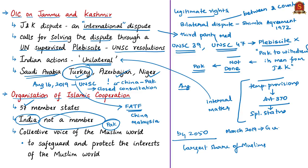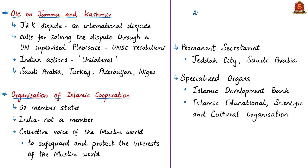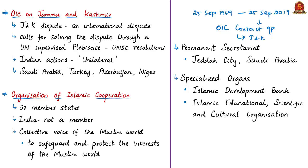OIC calls itself the collective voice of the Muslim world and seeks to safeguard and protect the interests of the Islamic people across the world. It was established based on a decision taken at a summit held on 25th September 1969 in the Kingdom of Morocco. Exactly 50 years later, on 25th September, the contact group of OIC issued a press statement calling for settling of the Jammu and Kashmir dispute in line with UN Security Council resolutions.